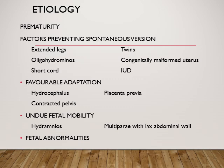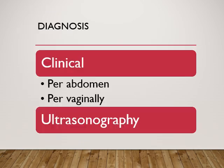Factors preventing spontaneous version include extended legs, multiple pregnancy, oligohydramnios, congenitally malformed uterus, short umbilical cord, and intrauterine fetal death. Conditions where there is favorable adaptation include hydrocephalus, placenta previa, and contracted pelvis. Undue mobility of the fetus — as in hydramnios and multipara with lax abdominal wall — and certain fetal abnormalities like trisomies, anencephaly, and myotonic dystrophy are also etiological factors.